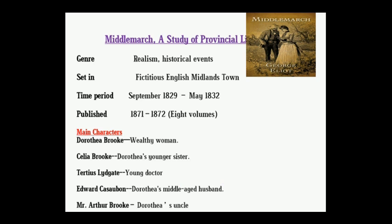About Middlemarch: subtitle 'A Study of Provincial Life.' Genre: realism and historical fiction. Setting: fictitious English Midlands town. Time period: September 1829 to May 1832. Published during 1871 and 1872 in eight volumes. Main characters: Dorothea Brooke, Celia Brooke, Tertius Lydgate, Edward Casaubon, Mr. Arthur Brooke, and Will Ladislaw.